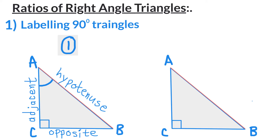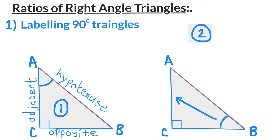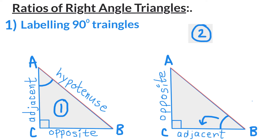Now let's look at triangle number two, which is exactly the same as triangle number one but labeled with regard to angle B. In this triangle, opposite of angle B is the opposite side. Adjacent to angle B is the adjacent side, and remember the hypotenuse is always across from right angle C.